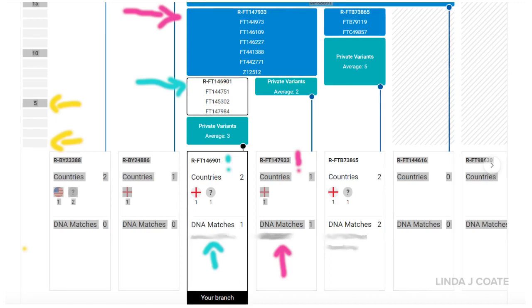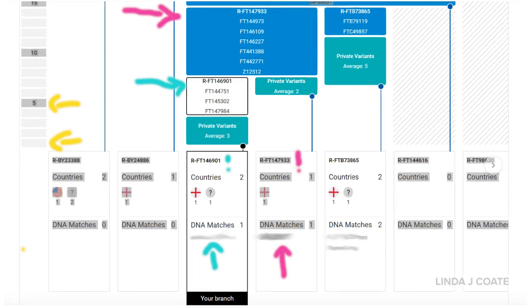In summary, the pink column matches us to a cousin where our first common ancestor is 14 SNPs back, and the aqua column matches a cousin whose common ancestor we know is Henry Cote, and he's approximately seven variations back in time.